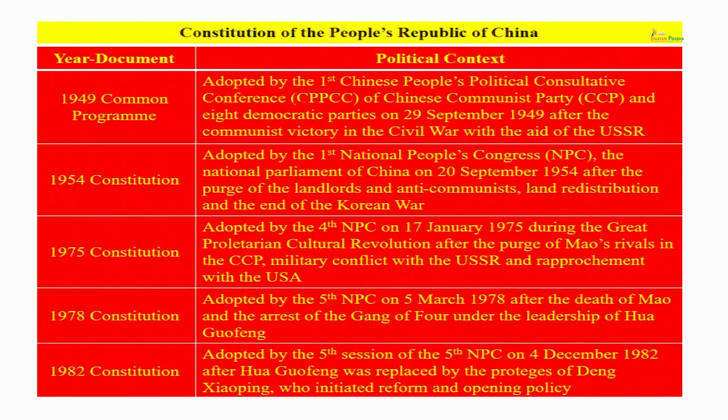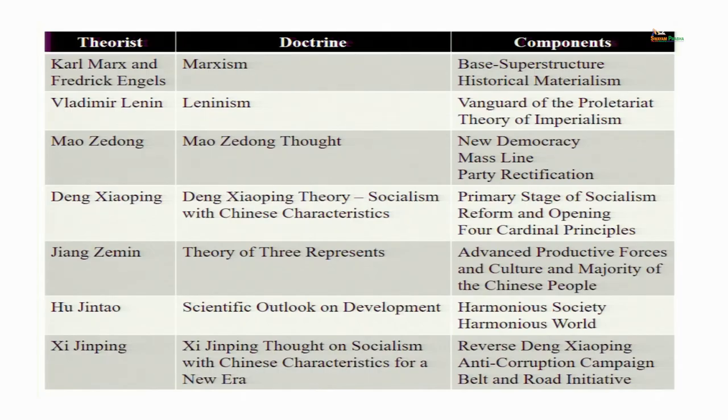One famous recent change was that Xi Jinping introduced a change — I believe in his first term — that there would be no term limits for the president. Otherwise there were two term limits of five years each, totalling 10 years. Xi Jinping amended the constitution and now there are no term limits, so he could continue for a third term and perhaps even after that.